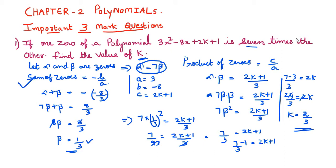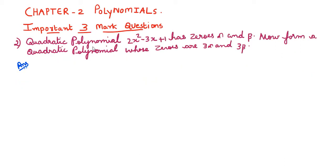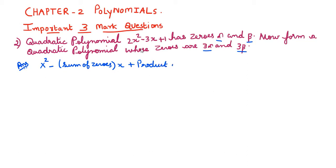We used the formulas for sum of zeros and product of zeros. The second question: the quadratic polynomial 2x² minus 3x plus 1 has zeros alpha and beta. Form a quadratic polynomial whose zeros are 3 alpha and 3 beta. We use the formula: x² minus (sum of zeros)x plus (product of zeros).